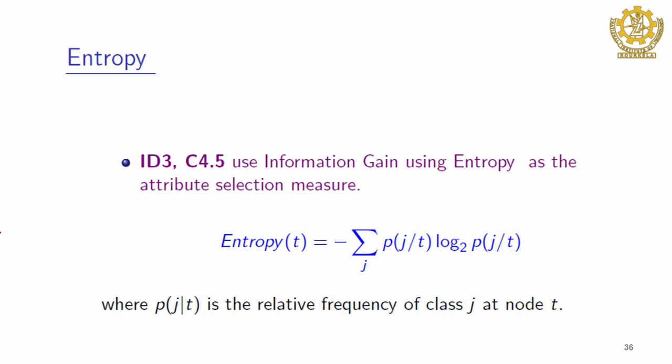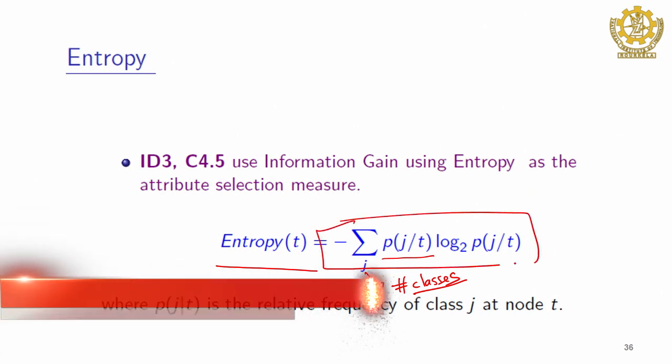Entropy is used in ID3 and C4.4 and C4.5; they use information gain based on entropy. This is the formula for entropy: the entropy at a particular node T will be the summation over the number of classes, where p(j,T) is the relative frequency of class j at node T. We have discussed this formula earlier also.